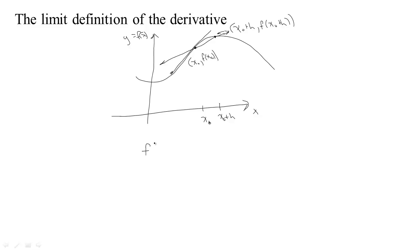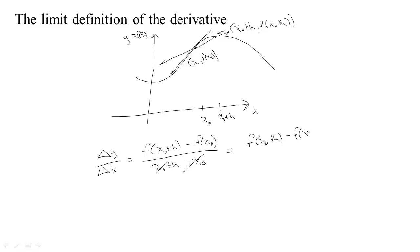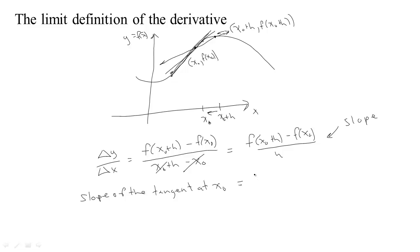The slope of the secant would be the rise over the run — the change in y over the change in x. That would be f of x-naught plus h minus f of x-naught, all over x-naught plus h minus x-naught. Those would cancel and just leave us h. So that was the slope of the secant. And the plan was to take the limit as h tends to zero. As h goes to zero, these two points would come closer and closer together, and so the slopes of this succession of secants would get closer and closer to the slope of the tangent. So the slope of the tangent at x-naught equals the limit as h tends to zero of [f(x-naught + h) − f(x-naught)] / h.